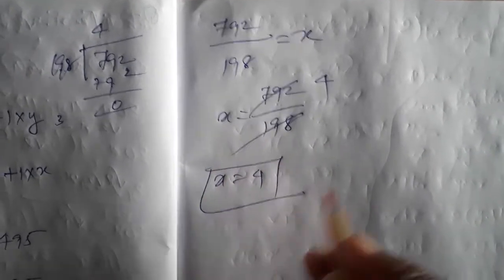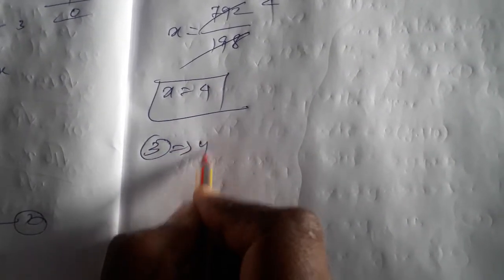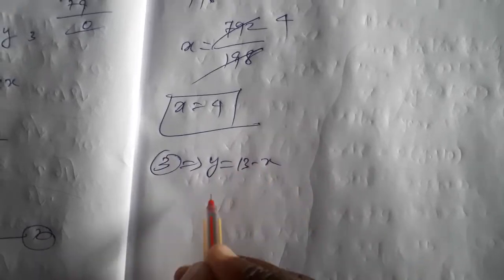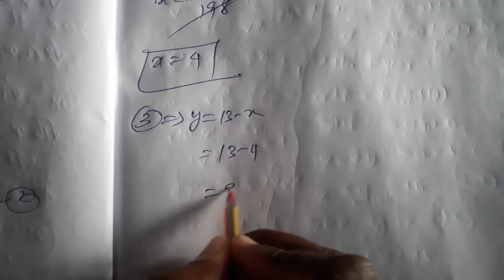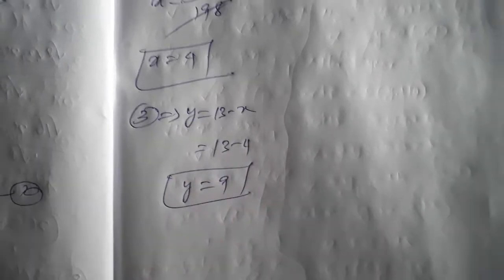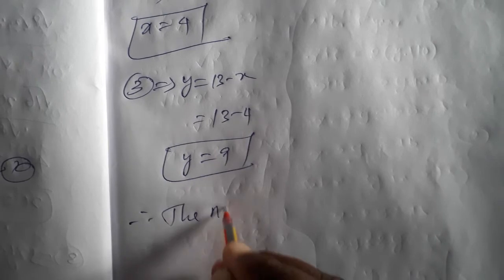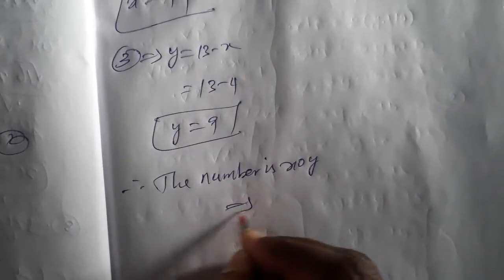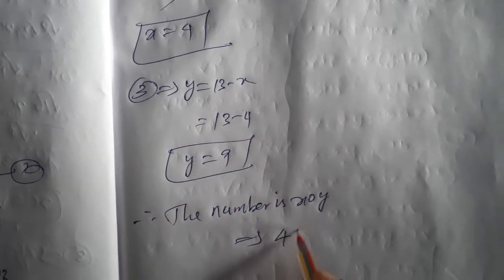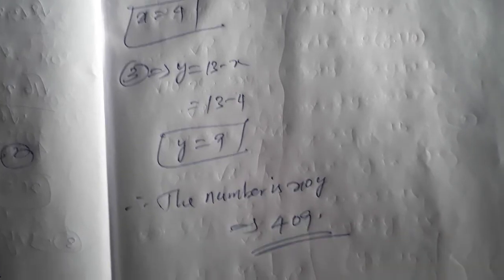x equals 4. Substituting in equation 1: y equals 13 minus x, so y equals 13 minus 4, giving y equals 9. Therefore the number is x, 0, y — that is, 4, 0, 9. The number is 409.